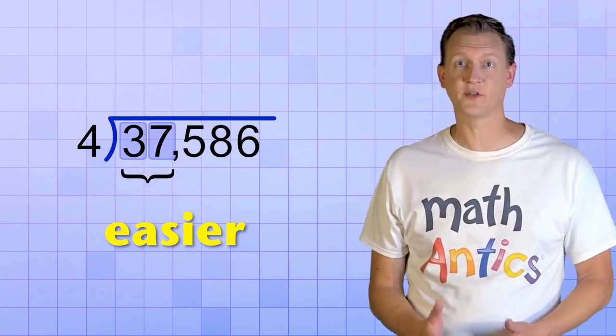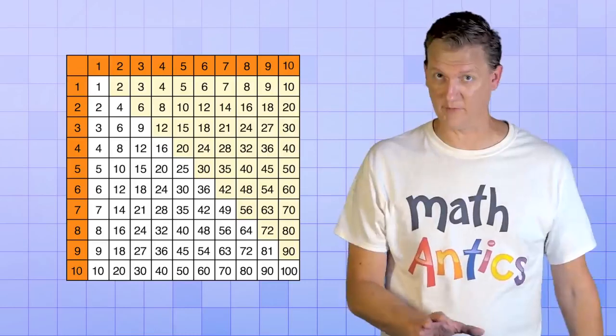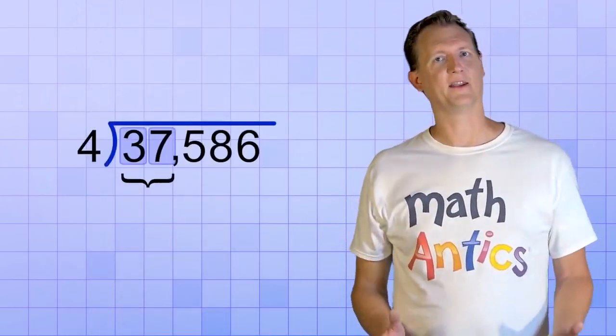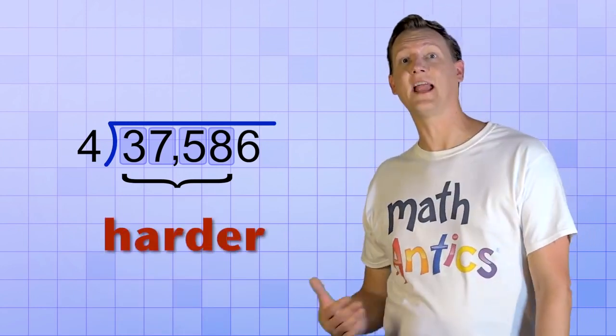If you only have to divide into 1 or 2 digits of the dividend at a time, it's much easier because all of the answers to those smaller division steps can be found on the multiplication table. Which you have memorized, right? Yeah… But when we have to go 3 or 4 digits at a time, it's a lot harder to figure out the answer of each step.